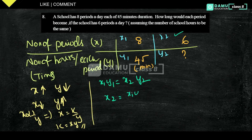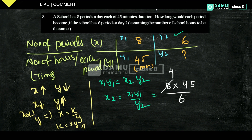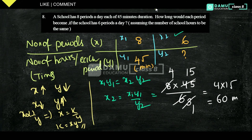We need to find Y2. Rearranging: Y2 = X1 × Y1 / X2 = 8 × 45 / 6. Simplifying: 8 / 6 = 4/3, so Y2 = 4 × 15 = 60 minutes. So if you take 6 periods, then each period will be 60 minutes, that is 1 hour. Thanks for watching, please subscribe.